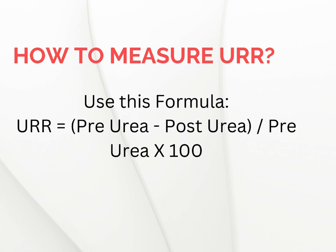URR is a simple percentage that tells us how much urea we have removed. The formula — which you may already be aware of — is: pre-dialysis urea minus post-dialysis urea, divided by pre-dialysis urea, times 100. You can think of URR this way: imagine you are drinking a super sugary soda and filtering it through a magic machine that removes sugar. The more sugar removed, the better the filter. The same concept applies with URR and dialysis.